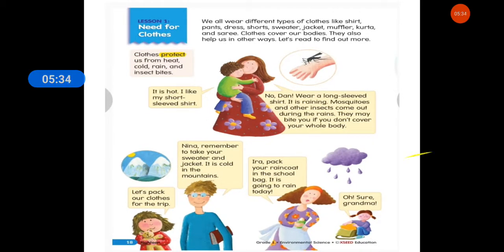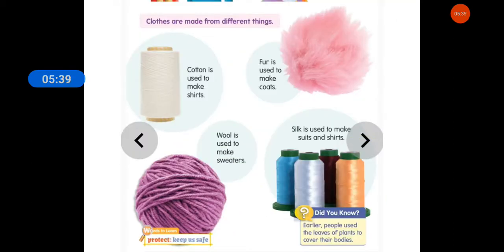Now, it's time for the next stanza. So, next stanza is about clothes are made from different things. Cotton is used to make shirt, fur is used to make coats, wool is used to make sweaters and silk is used to make suits and shirts. I hope it is clear. Students, did you know earlier people use the leaves of plants to cover their bodies?